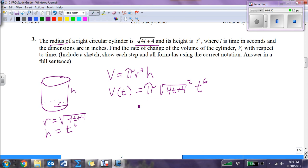The volume equation is the area of the base, pi r squared, times the height h. In our case, the volume in terms of t is pi times square root of 4t plus 4 squared times t to the sixth. This equals pi times 4t plus 4 times t to the sixth, which becomes pi 4t to the seventh plus 4pi t to the seventh.